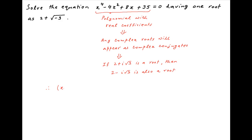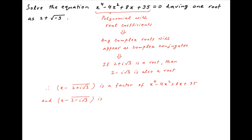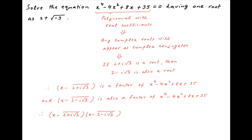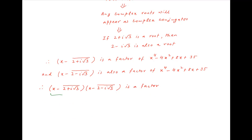This implies that x minus (2 + i√3) is a factor of x⁴ - 4x² + 8x + 35. And x minus (2 - i√3) is also a factor of x⁴ - 4x² + 8x + 35. It therefore follows that their product, [x - (2 + i√3)] multiplied by [x - (2 - i√3)], is also a factor of x⁴ - 4x² + 8x + 35.